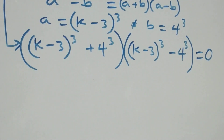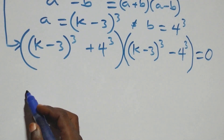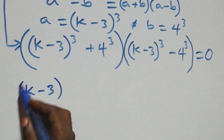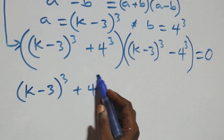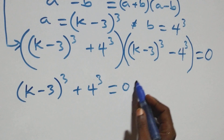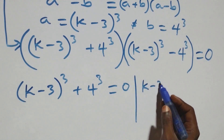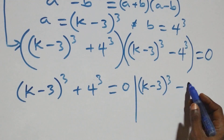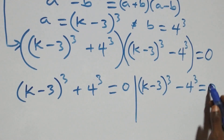The next step: we have two possible cases. That is, (k minus 3) all raised to power 3, plus 4 raised to power 3, equals zero; or (k minus 3) all raised to power 3, minus 4 raised to power 3, equals zero.